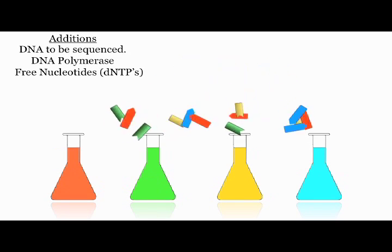Free nucleotides, or dNTPs, are then added to the reaction mixtures. One of these dNTPs is usually radiolabeled with a 32-phosphorus or 35-sulfur atom. This helps in determining the DNA sequence later.